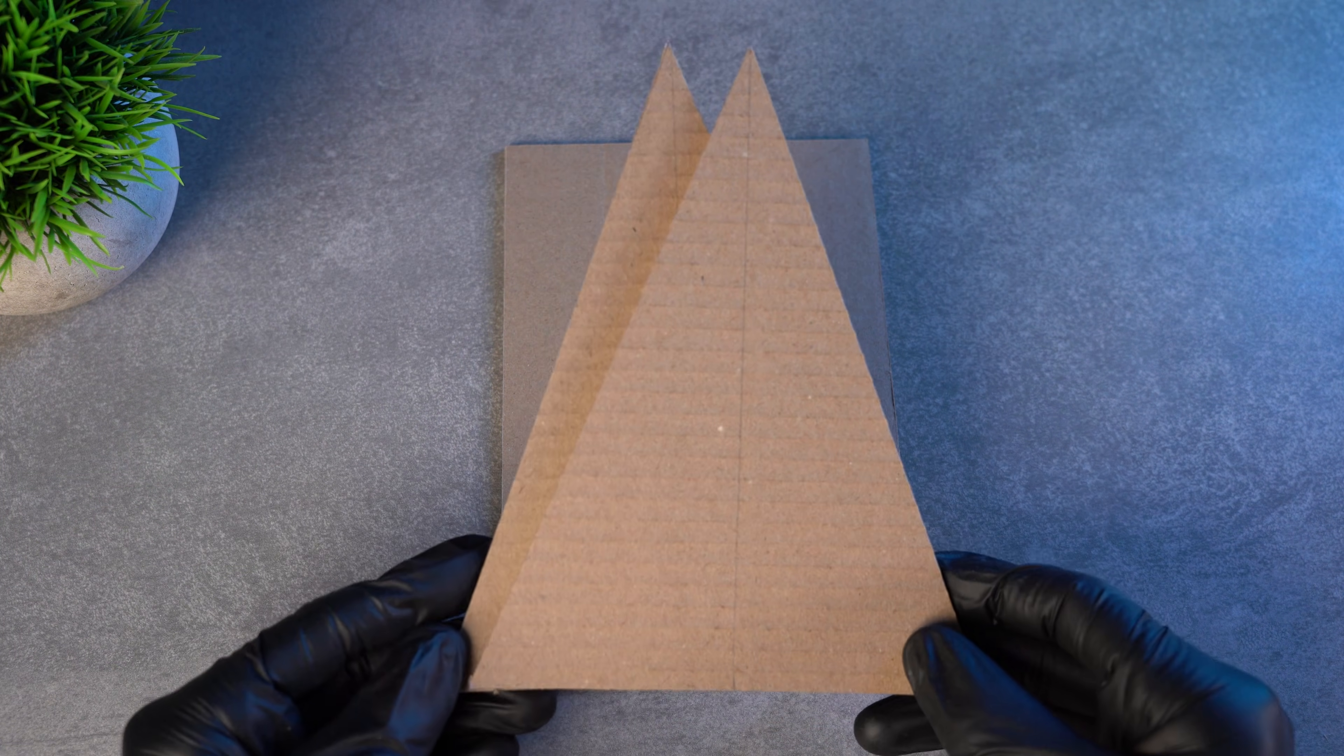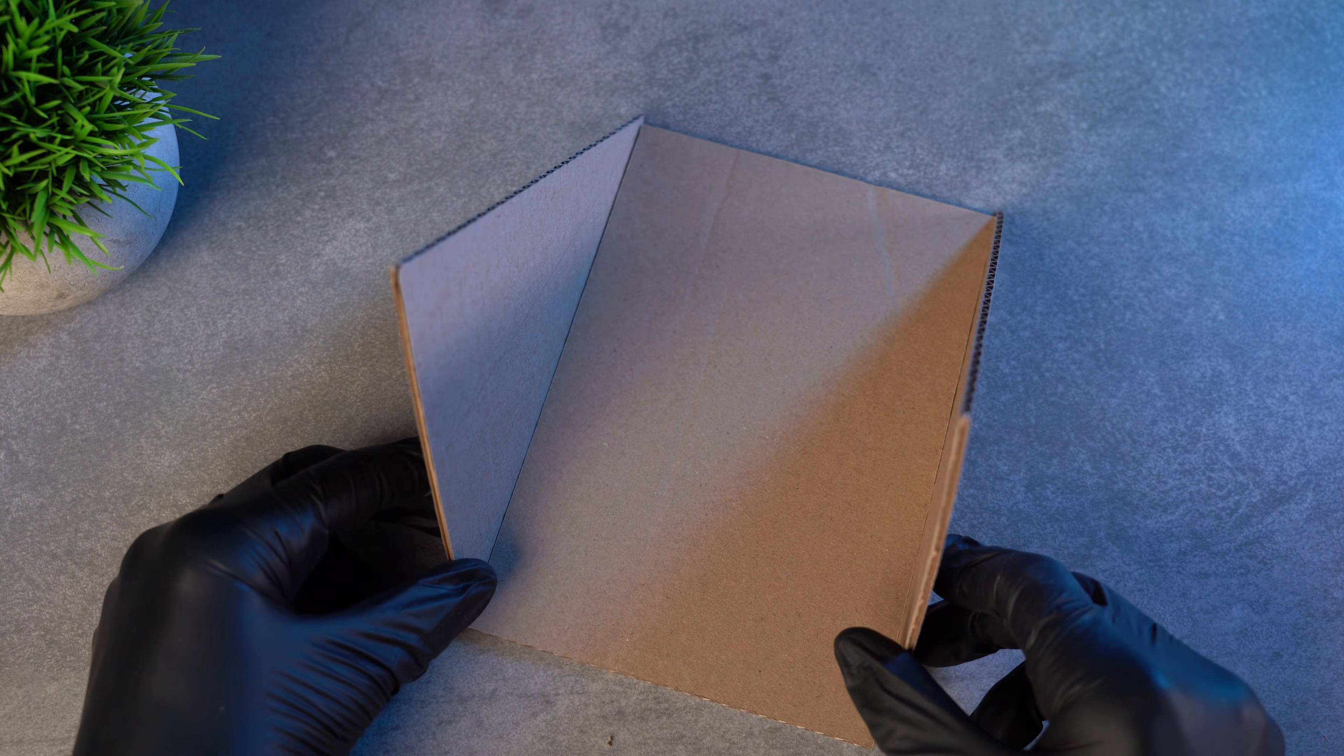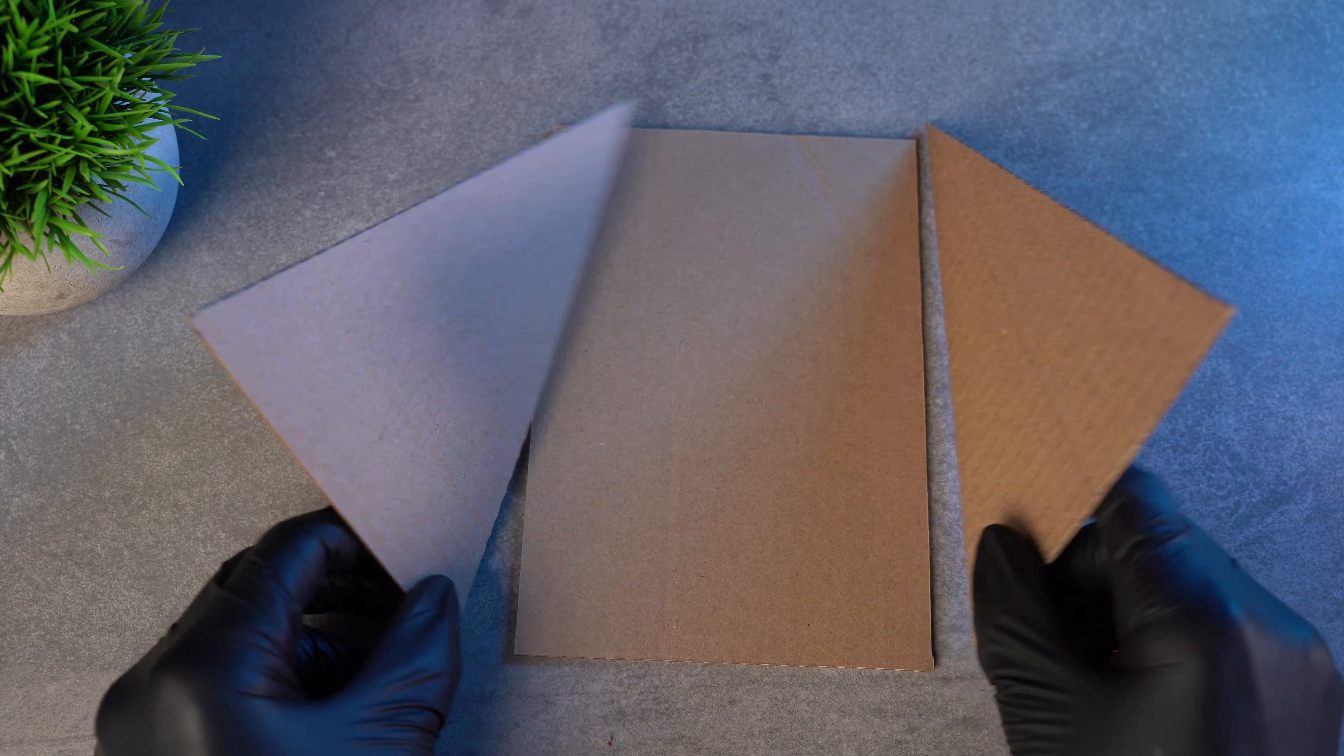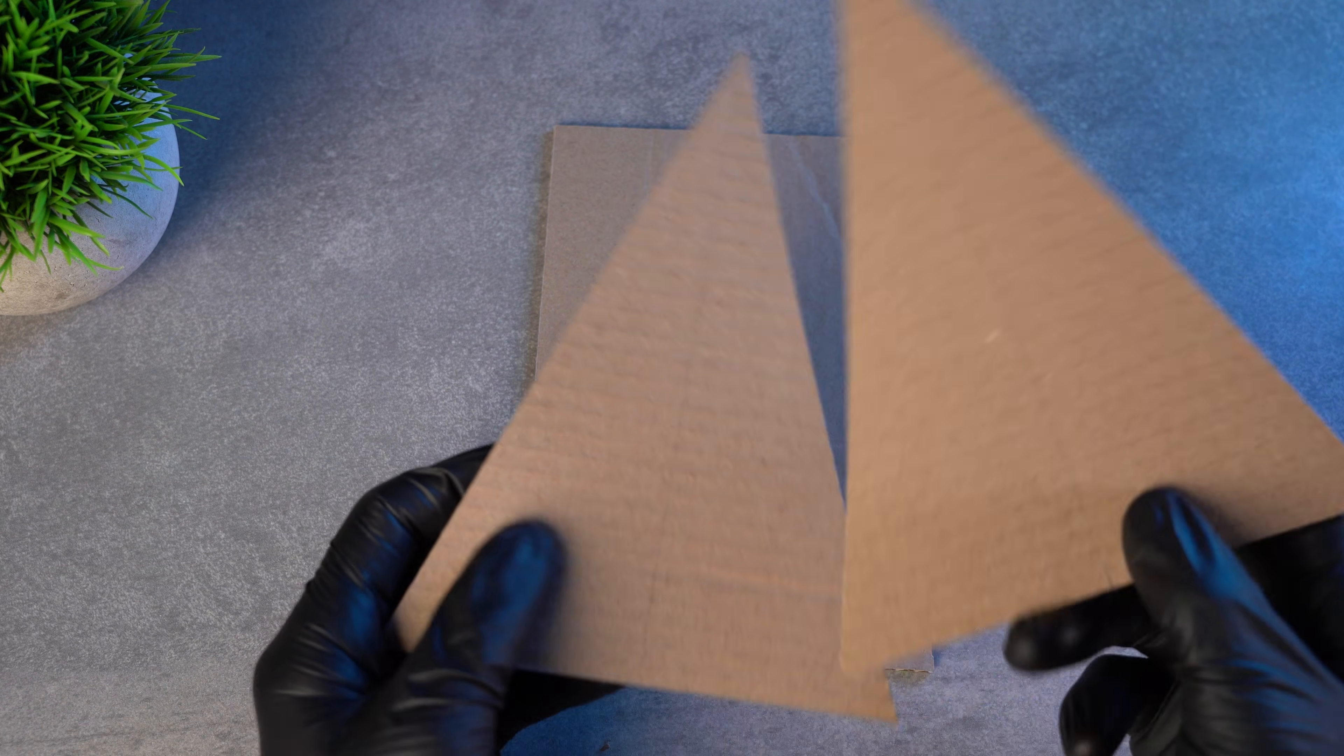Then I do the same on the other side. We need two identical triangles. Later, we'll attach them to the first cardboard sheet like this. But before that, we need to make one more thing.